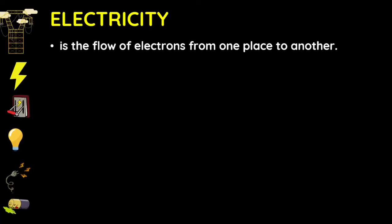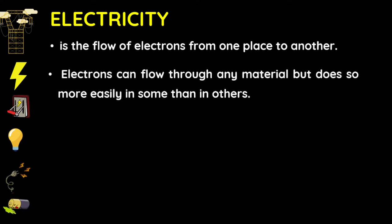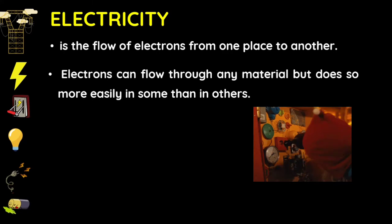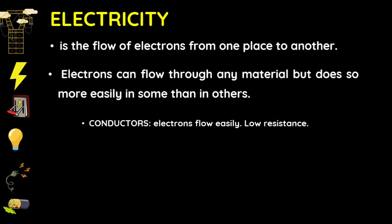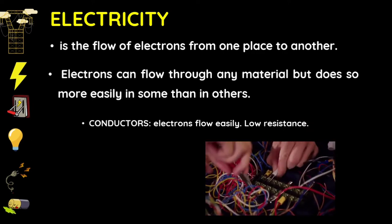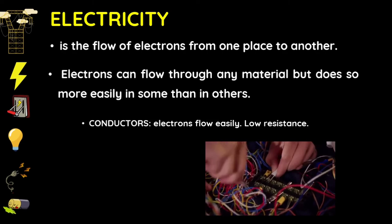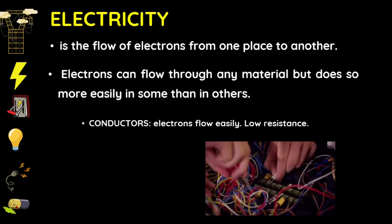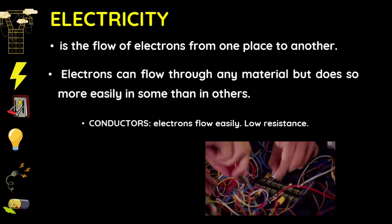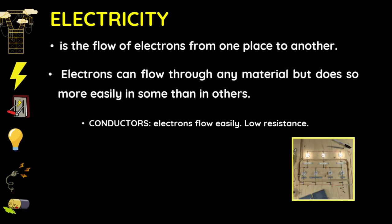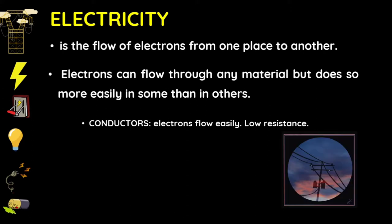Electricity is the flow of electrons from one place to another. Electrons can flow through any material, but do so more easily in some than in others. Conductors are materials wherein electrons flow easily because of their low resistance. A conductor is an object or type of material that allows the flow of charge or electrical current in one or more directions. Materials made of metal are common electrical conductors.